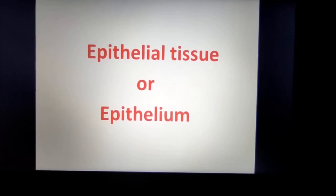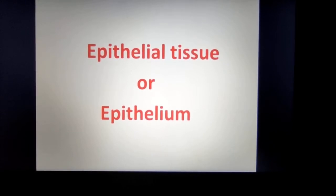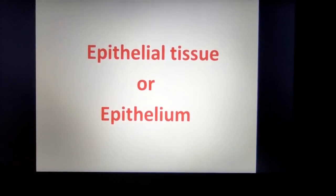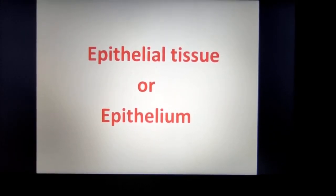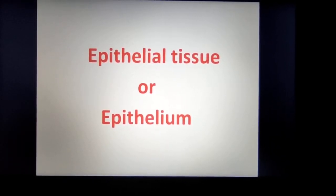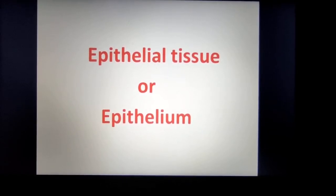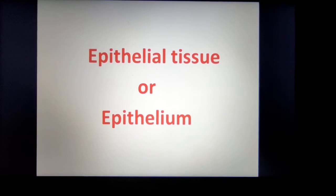Now let's see which are the types of tissue. Tissue is divided into four types: epithelial tissue, connective tissue, muscular tissue, and nervous tissue. Today's session is about epithelial tissue, or epithelium.